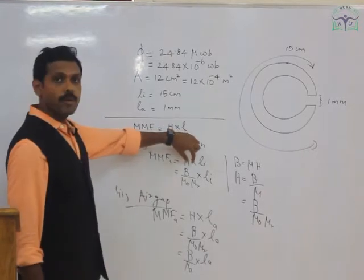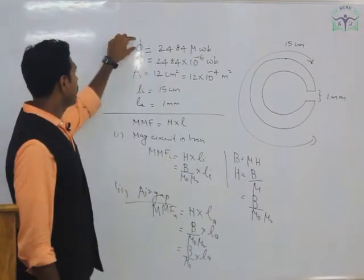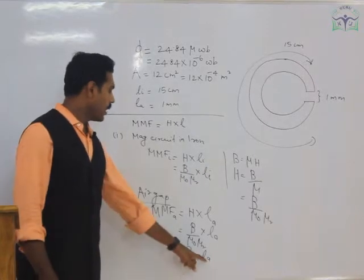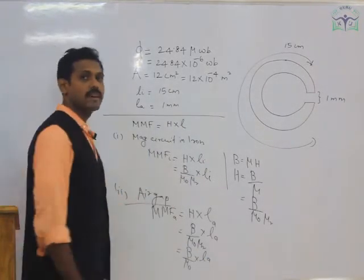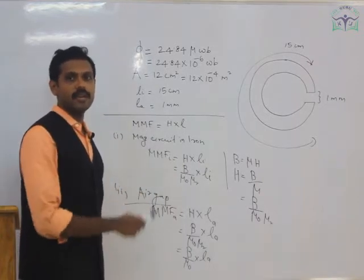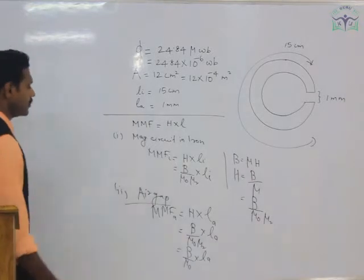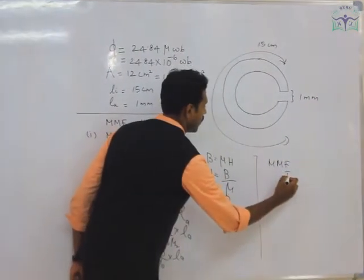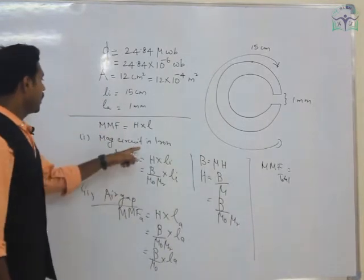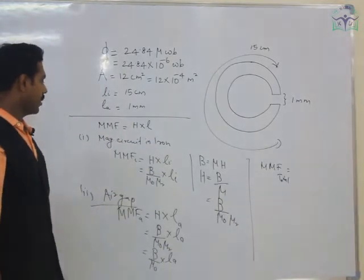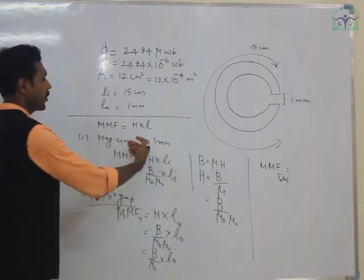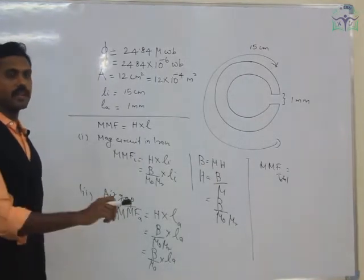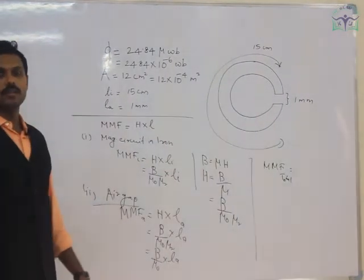B is the same value as substituted earlier: B = φ / A. µ₀ = 4π × 10⁻⁷, and the length of the air gap is 1 mm. Substituting these values gives the MMF of the air gap. The total MMF equals MMF of iron plus MMF of the air gap, and the final answer is approximately 19 ampere-turns.